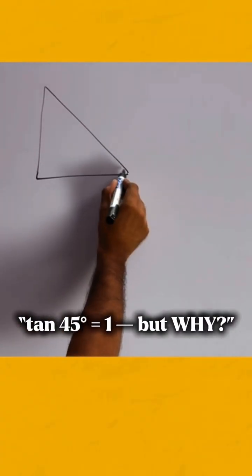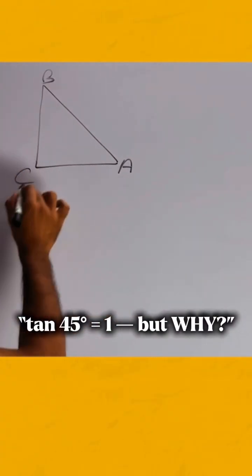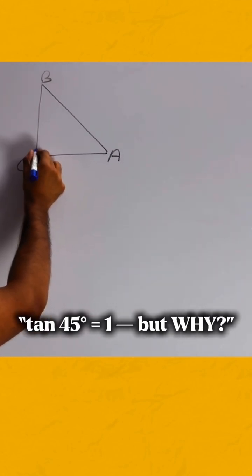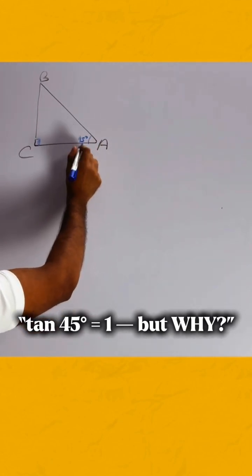Consider a right triangle A, B, and C. Angle C is 90 degrees. Let angle A be 45 degrees.